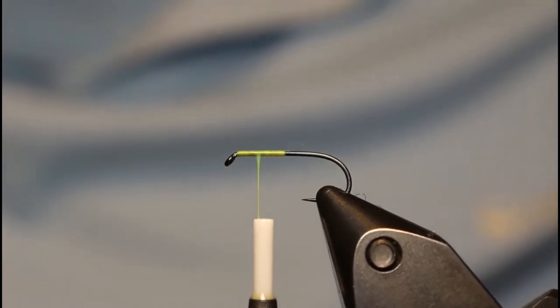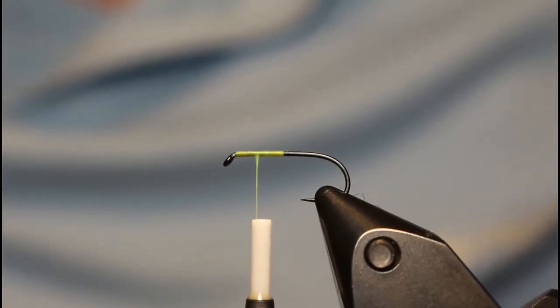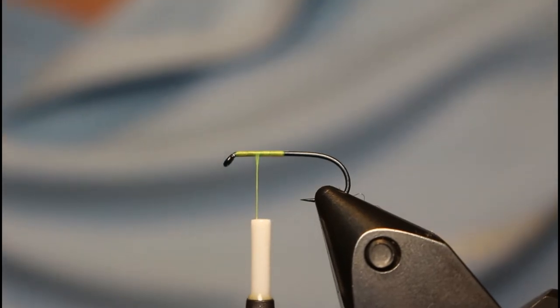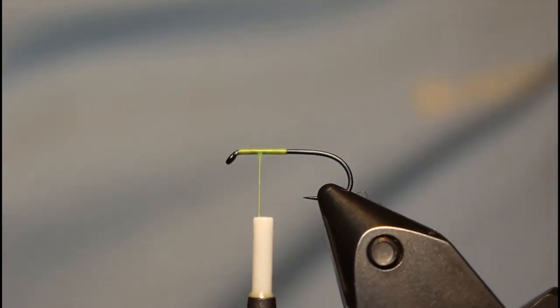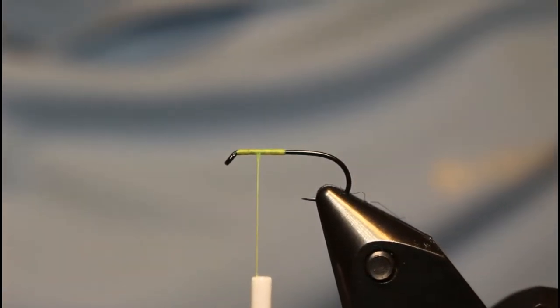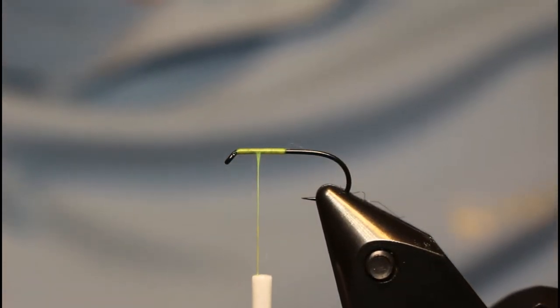So we've got a size 12 dry fly hook in the vise. This is a Tiemco 900, it's barbless. We've got some UTC 70 in fluorescent orange. I picked a bright color so you could hopefully see it better. We're not going to tie the entire caddis fly, we're just going to show how to tie in the wing.